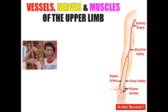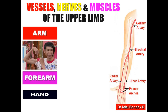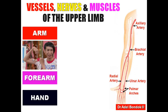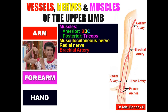Regarding the vessels, nerves, and muscles of the upper limb: the arm is divided into anterior compartment and posterior compartment. The anterior compartment contains three muscles — the BBC: biceps, brachialis, and coracobrachialis. The posterior compartment contains only one muscle, which is the triceps.